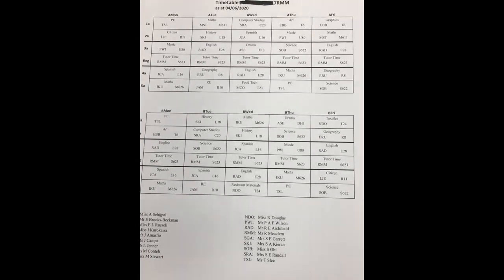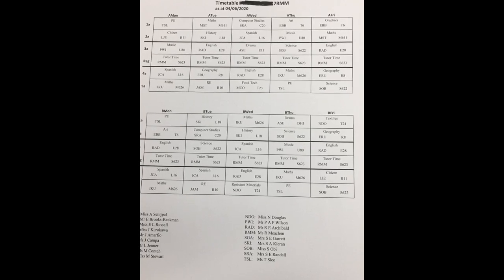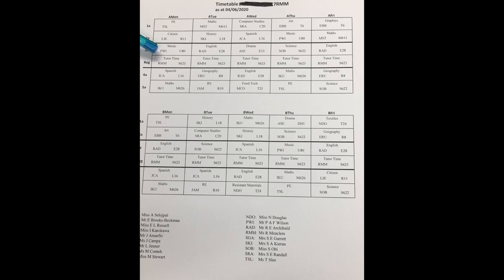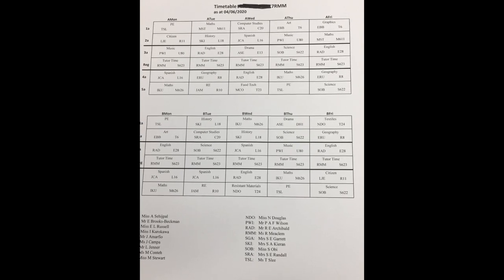We then have period 3. This student has music with Mr Wilson in U80, which is the music block. We then go to registration — we call it personal development time, or tutor time on your timetable. You go and meet your tutor and you will have half an hour in your tutor room working through the character and culture programme, or on a Monday you will have collective worship, and another day in the week you may have collective worship for your year group.